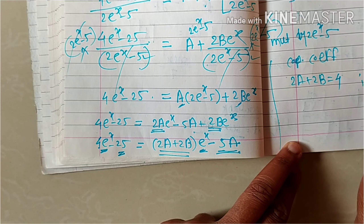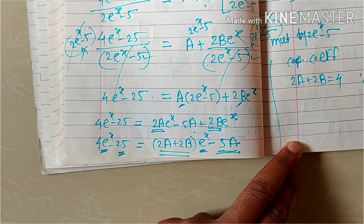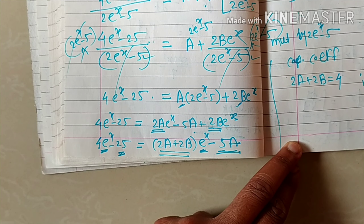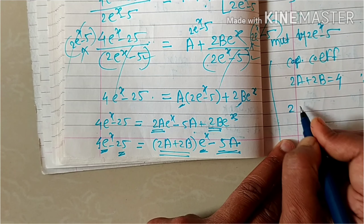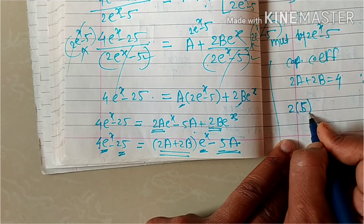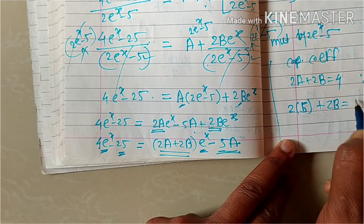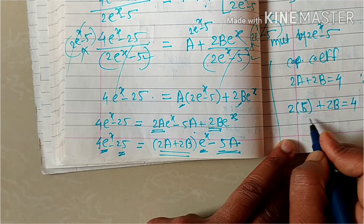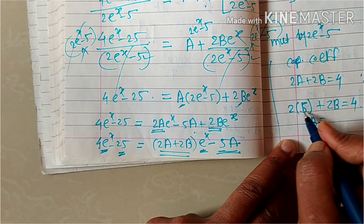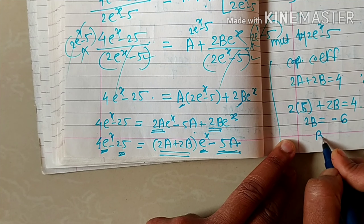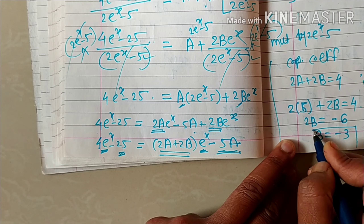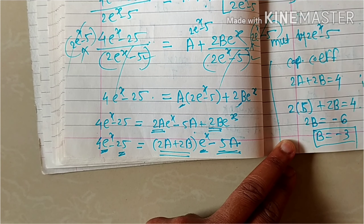Comparing the constant term: minus 5a equals minus 25, so a equals 5. Substituting this value of a: 2 times 5 plus 2b equals 4, which gives 2b equals 4 minus 10, so 2b equals minus 6, therefore b equals minus 3.